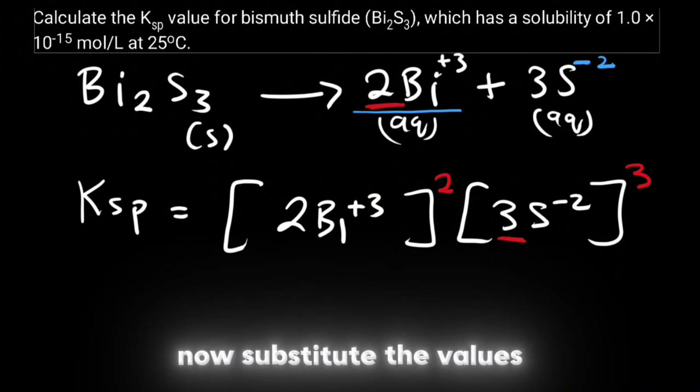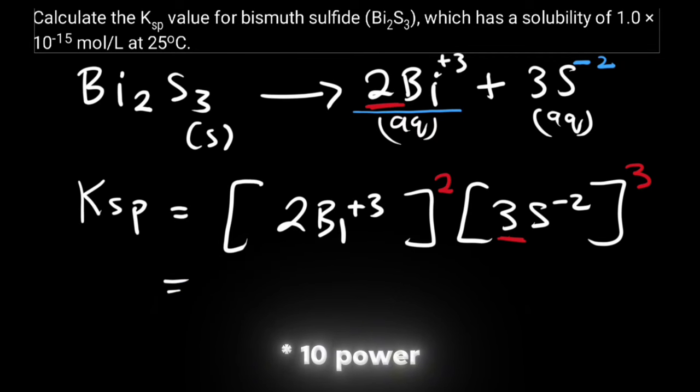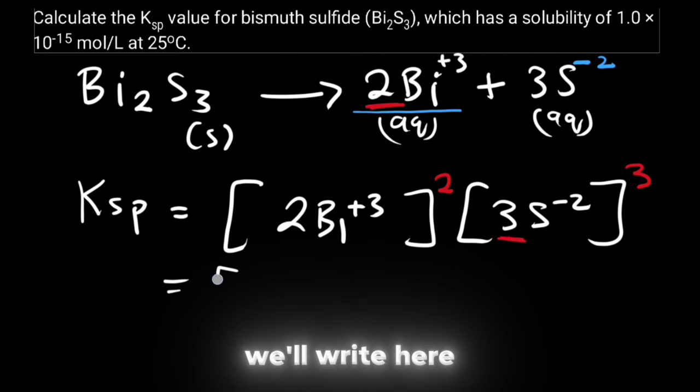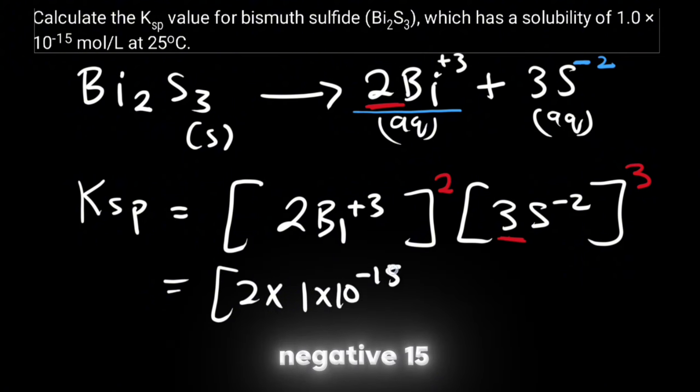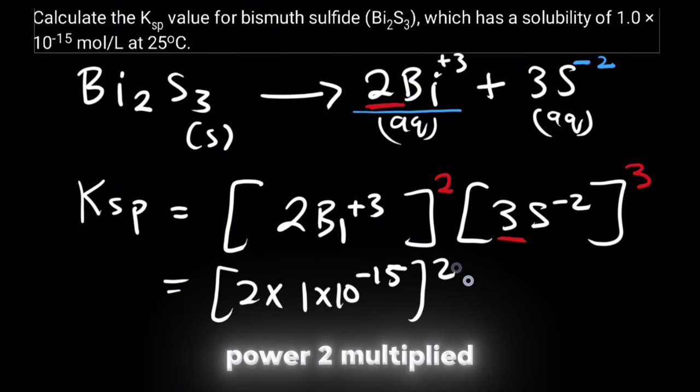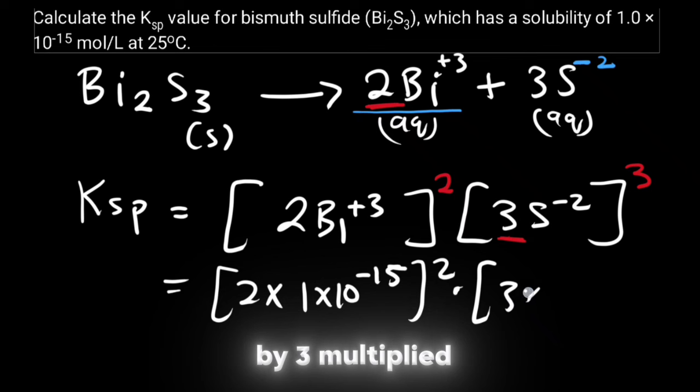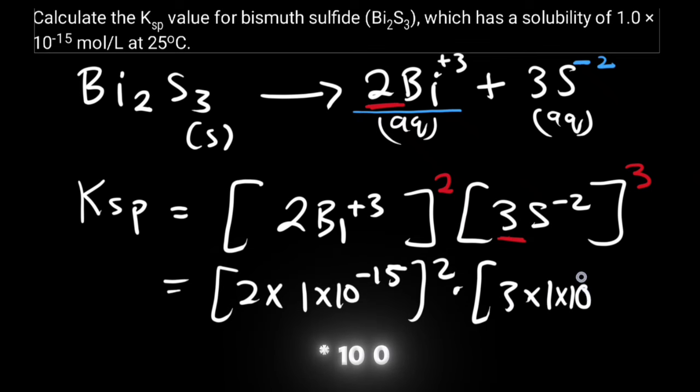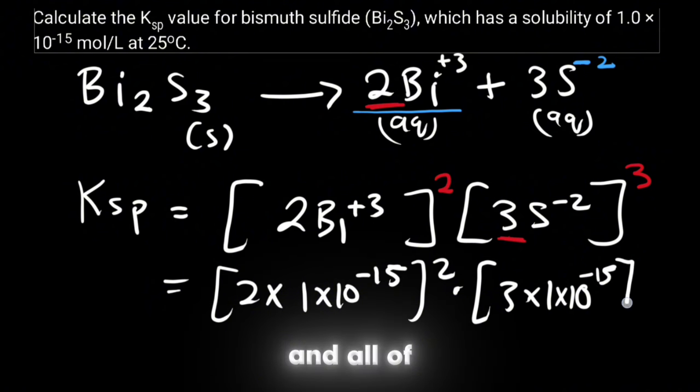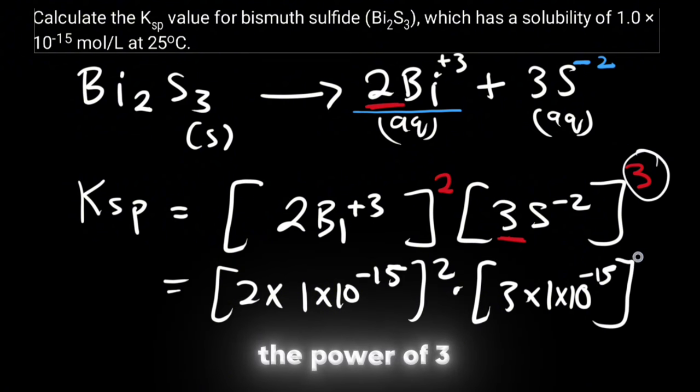Now substitute the values. The solubility is given as 1 times 10 power negative 15. We will write here 2 times 1 times 10 power negative 15 power 2 multiplied by 3 multiplied by the solubility which is 1 times 10 power negative 15 and all of this is in the power of 3.